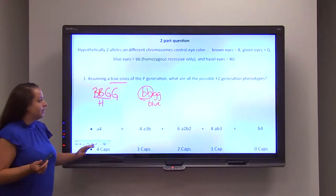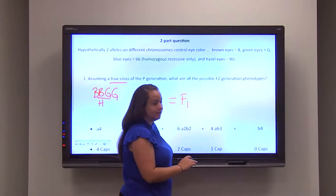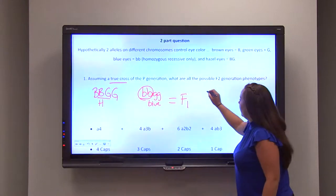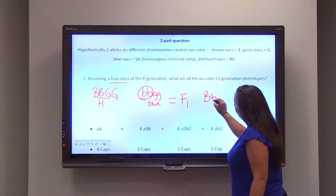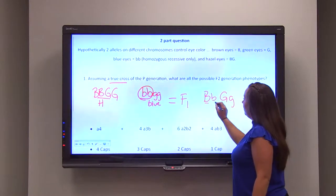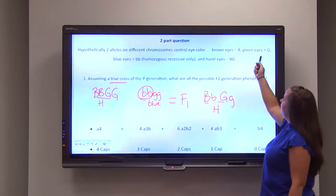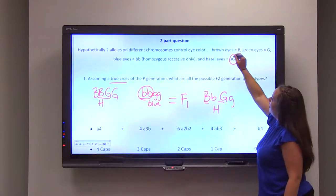Knowing this cross, we know that the F1 generation that will be produced is heterozygous. Heterozygous means one capital B, one lowercase, one capital G, one lowercase. These also will have hazel eyes because you have one capital B and one capital G.